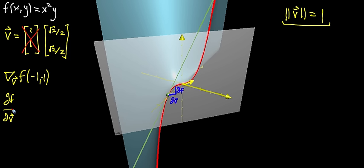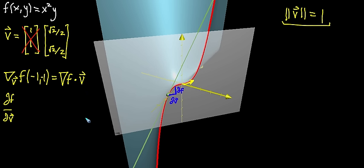Conceptually, partial f over partial v is a nicer notation. But the reason we use the nabla-sub-v notation is that it's very indicative of how you compute things: you take the gradient of f — just the vector-valued function — and take the dot product with your vector v.